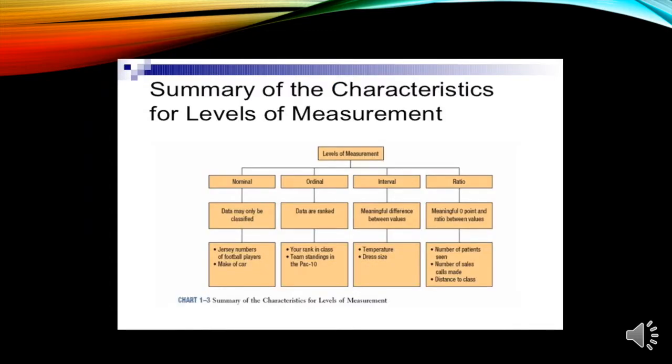We have also the summary of characteristics for all levels of measurement. We have the four levels of measurement: the nominal, ordinal, interval, and ratio. When we see nominal, data may only be classified. For example, jersey numbers of football players and make of car. These are the models of cars that come out every year. Then ordinal, we have the data are ranked. For example, ranked in class. We have selected, highest honor, high honor, and with honor. Then team standing in the Pac-10.